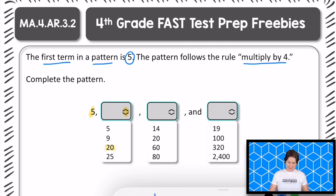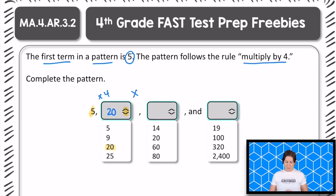Okay, so again, that was 5 times 4, which equals 20. Now, the next, so 20 is the second term. We need to continue to follow that rule of multiply by 4. So 20 times 4 is what?